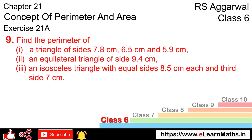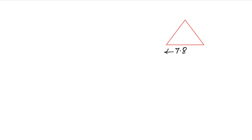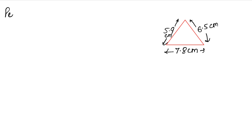Let's make a triangle. The sides are 7.8 cm, 6.5 cm, and 5.9 cm. We have to find the perimeter. The formula for perimeter that I have told you: add all sides.